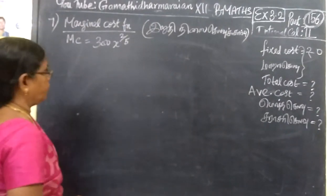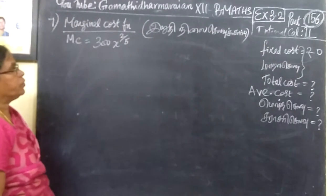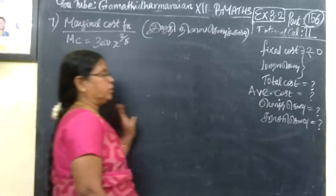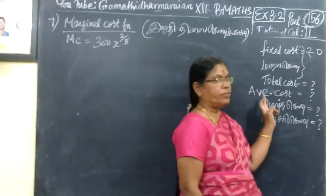So now, question number 7. Marginal cost is given. They are asking for total cost and average cost.